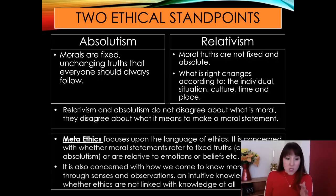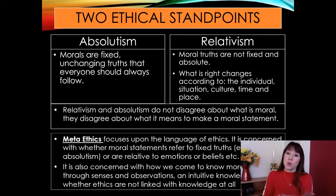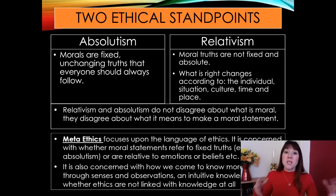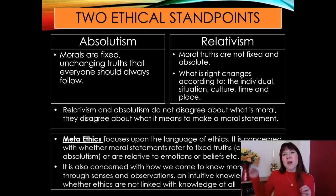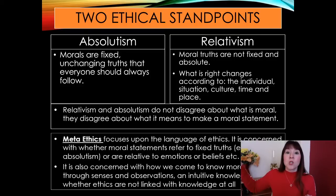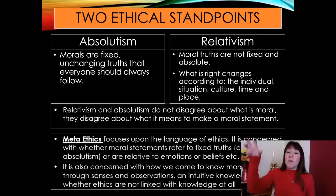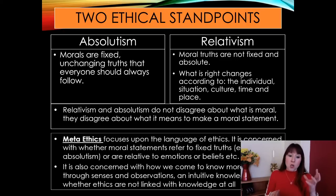What we're used to dealing with is called normative ethics — things like utilitarianism, natural law, situation ethics. Those are normative ethics, which say what you should and should not do, what is and is not good or bad. What meta ethics does is say, 'Hang on — what do you actually mean by the word good?' So when natural law says it is good for a man and woman in marriage to procreate, the normative part tells you what to do, but meta ethics asks: why is that good? What does the word 'good' actually mean?